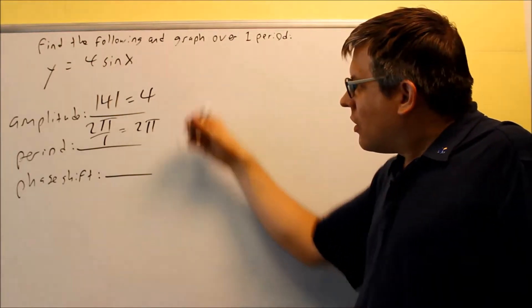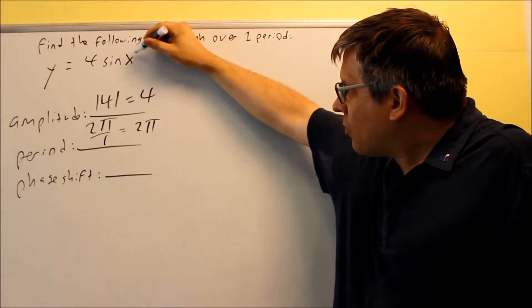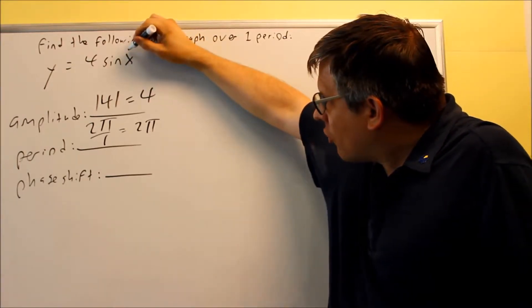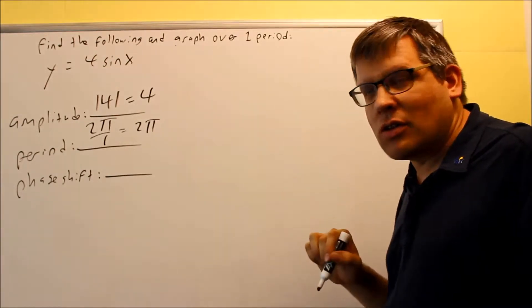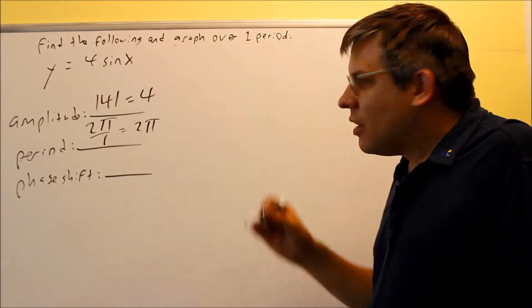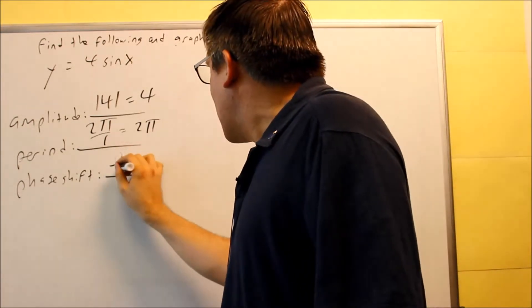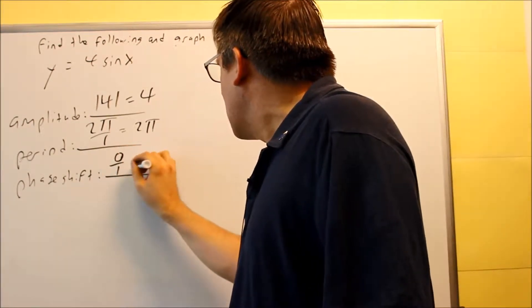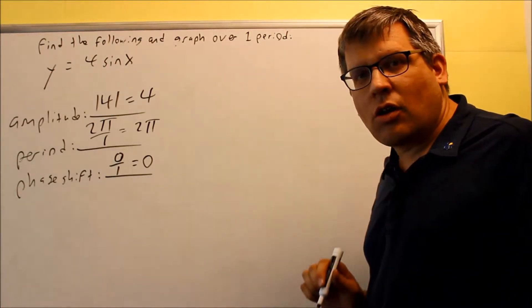Your phase shift would be, you're taking the opposite sign of c over b. Now, there is no number after the x here, so normally you'd have a parenthesis part, you'd have a plus or minus something after it. We don't have that in this case, so because of that, your phase shift is actually going to be 0. So, it would be 0 divided by the number in front of the x, and you would get 0 for the phase shift. That means it doesn't move left to right at all.